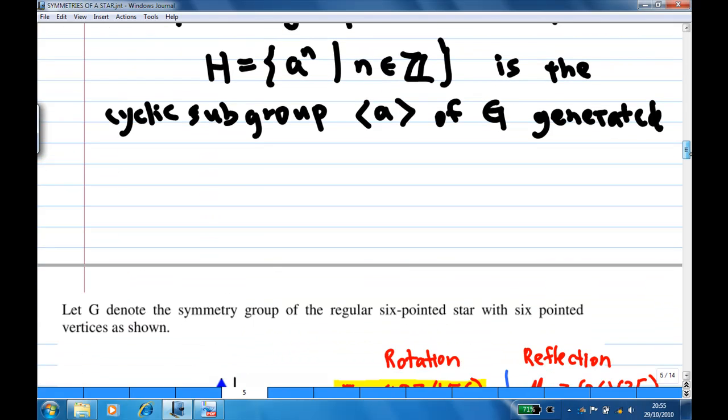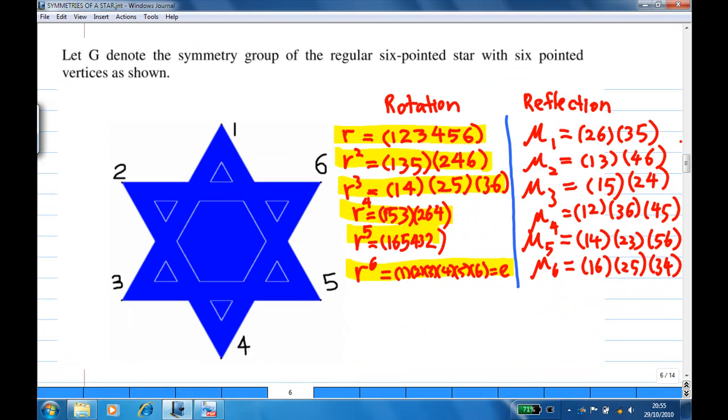There are all 12 elements. To find cyclic subgroups of G, what you do is take each element and look at what is the order of the element, then you can find the cyclic subgroup generated by each element.